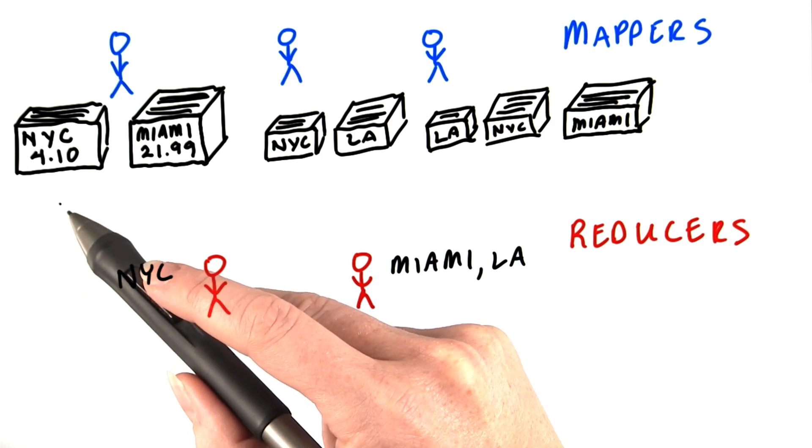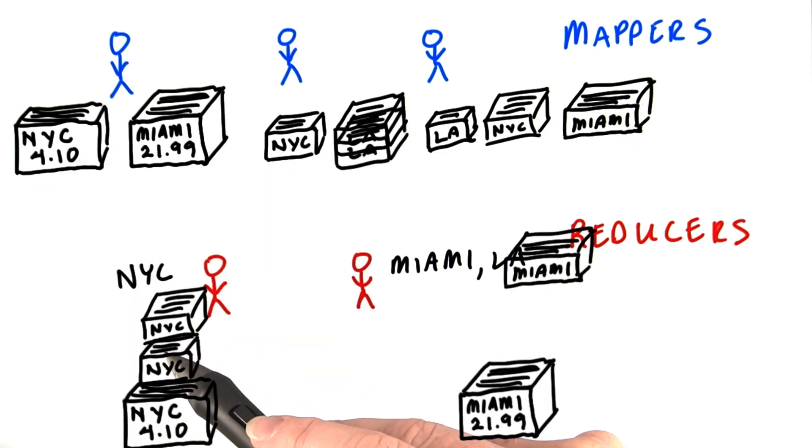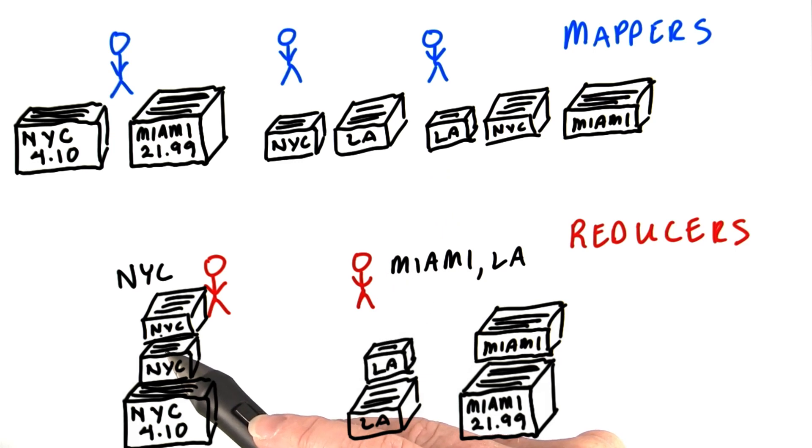The reducers go to the mappers and retrieve the pile of cards for their stores. It's fast for them to do because the mappers have already separated the cards into a pile per store.